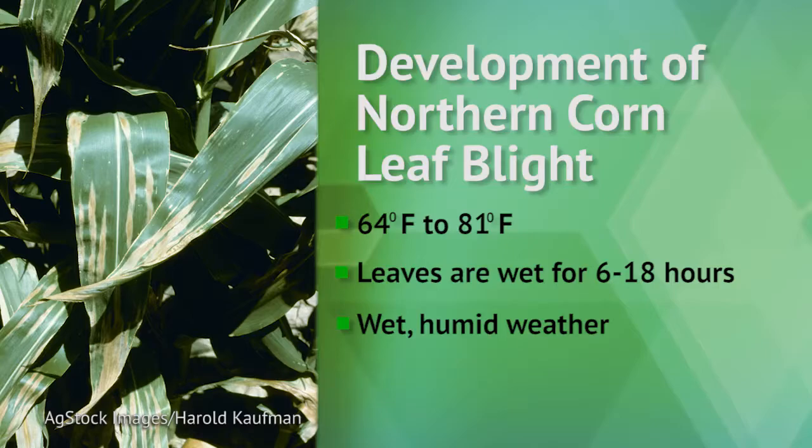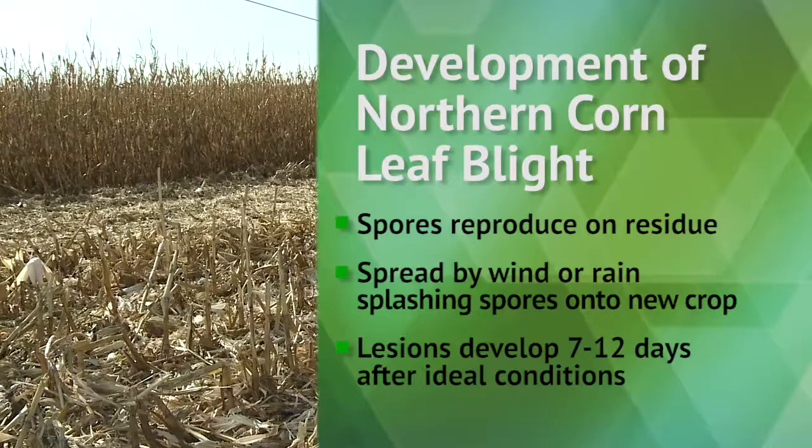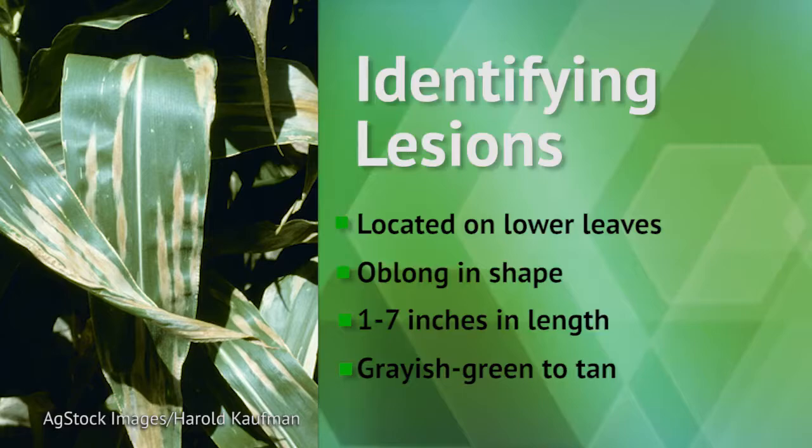The development of northern corn leaf blight generally occurs within a 17-degree range in wet, humid conditions. The fungal source survives in plant residue on the ground, typically from a previous corn crop and no-till practices, then moves up through the canopy.